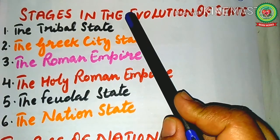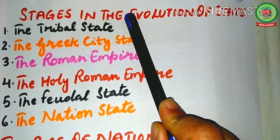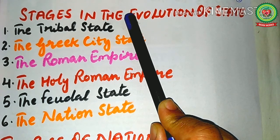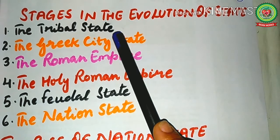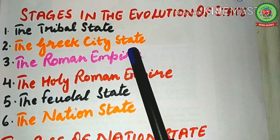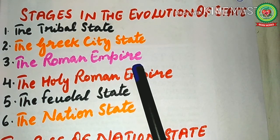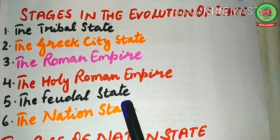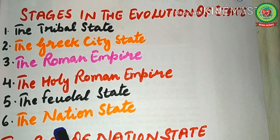The evolutionary origin of the state can also be seen from the stages in which it has evolved after its birth: the tribal state, the Greek city state, the Roman Empire, the Holy Roman Empire, the feudal state, and the nation state.